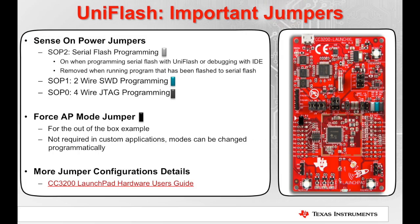When working with the CC3200 Launchpad, the most important jumper is the SOP2 jumper. When you're developing and debugging, you have this jumper on. You also have it on when programming the serial flash with UniFlash. You remove the SOP2 jumper when you want the CC3200 Launchpad to run the program you have programmed into the serial flash. The other jumper that should be on board when you receive the CC3200 Launchpad is the force access point mode jumper — this is for the out-of-box example, and you can remove it for your custom programs, as modes can be changed programmatically. There are many more jumpers available, and you can find out more at the CC3200 Launchpad hardware user's guide.